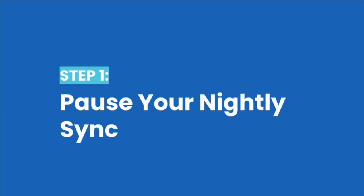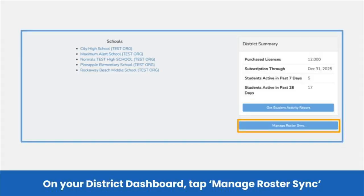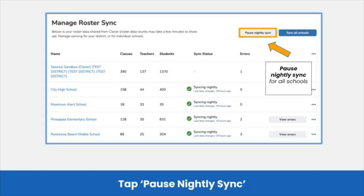First step: pause your sync. To pause your sync, head to your district dashboard and tap Manage Roster Sync. Then tap Pause Nightly Sync to pause the sync between Clever or Classlink and Seesaw. That's it — your sync is paused.